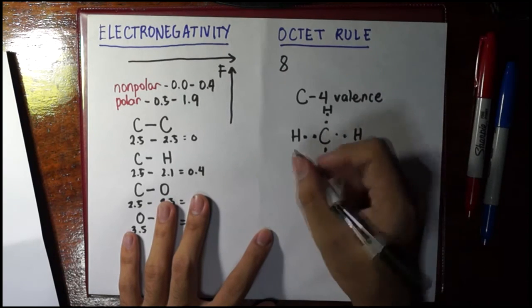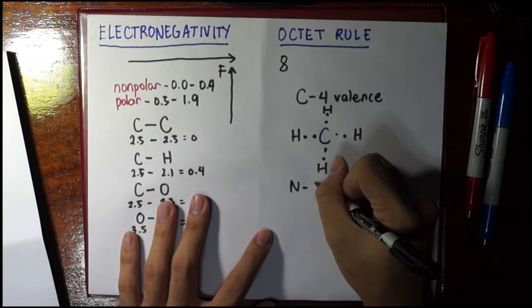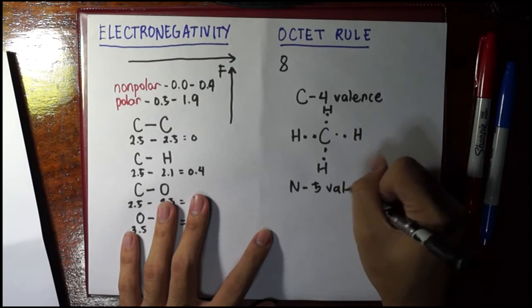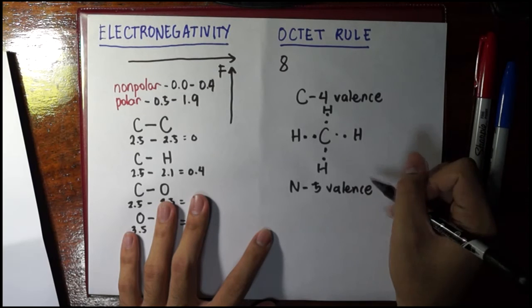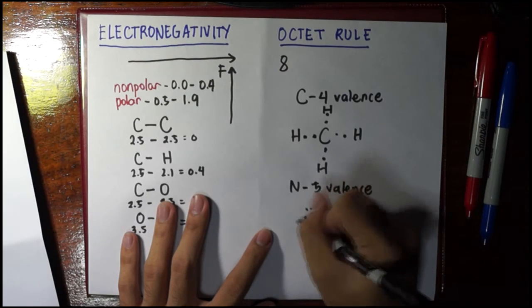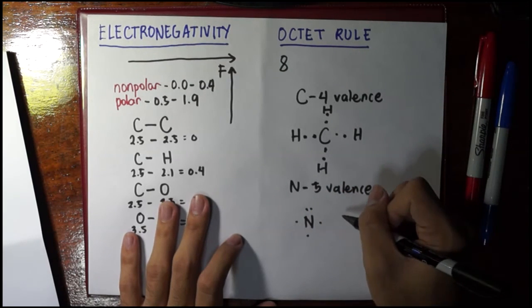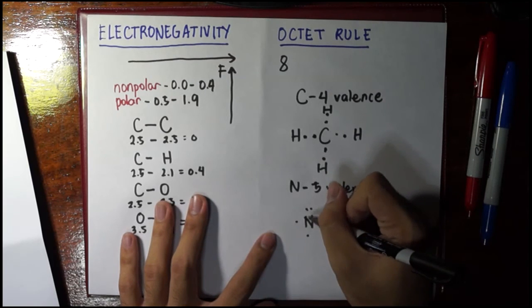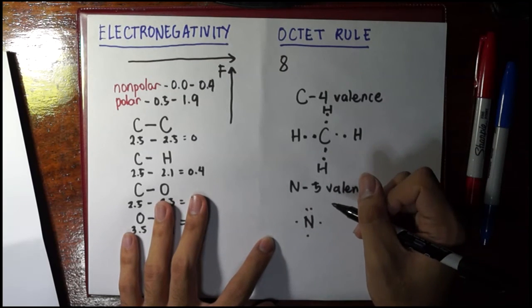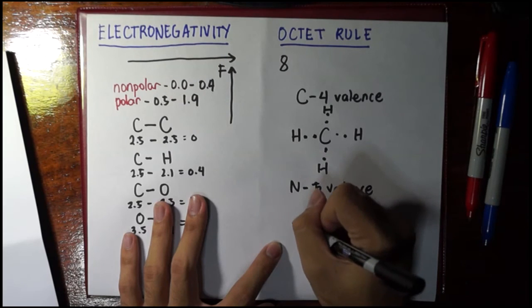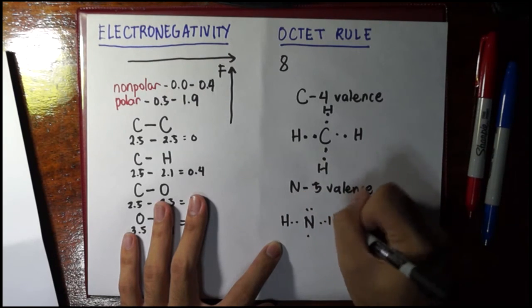Now, how about for nitrogen? It has five valence electrons. So if this is nitrogen, it has five valence electrons. It would now need just three electrons more. So meaning that it would accommodate three more bonds.